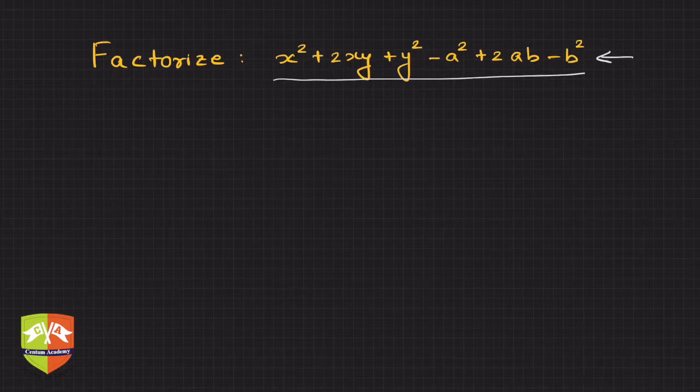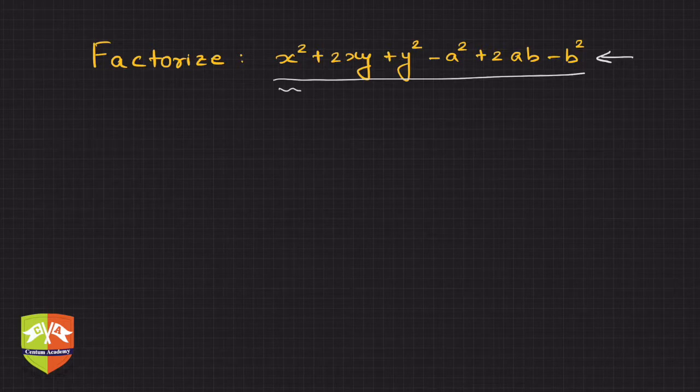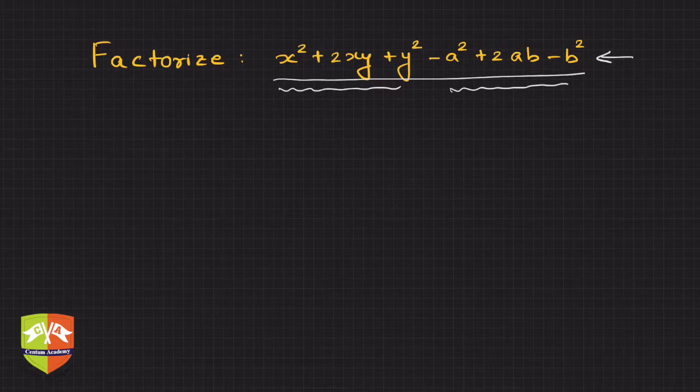Now how to approach this? If you notice, there are two types of variables: one is x and y together like that, and there is a and b.